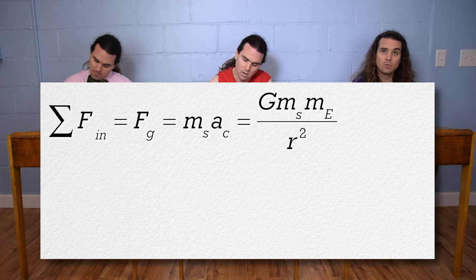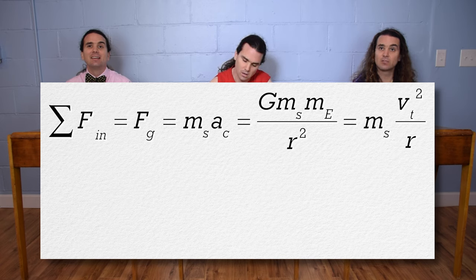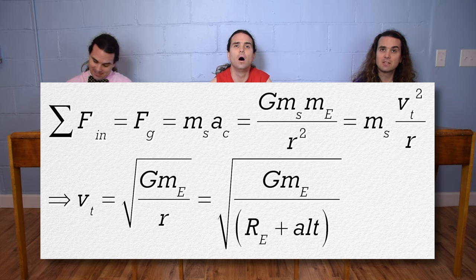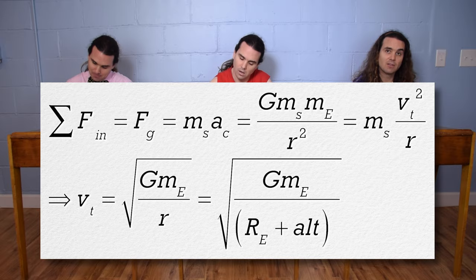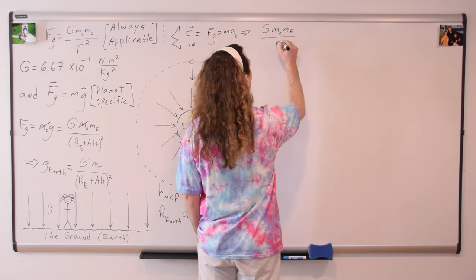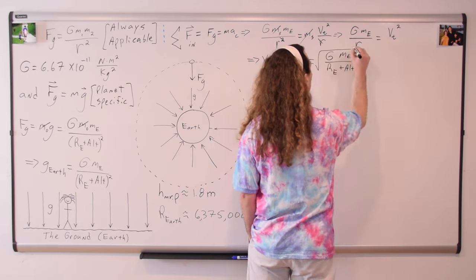That equals the mass of the satellite times the centripetal acceleration, for which we substitute tangential velocity squared divided by r. The mass of the satellite cancels out, and the inverse of r cancels out. We take the square root of the whole equation to get tangential velocity equals the square root of big G times the mass of the Earth, all divided by r. We should substitute in the radius of the Earth plus the altitude of the satellite for r to get the tangential velocity of the satellite. Very nice, Bo.